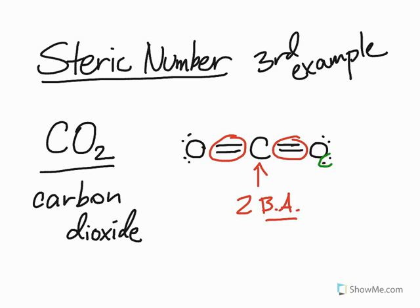Now you may say that these lone pairs around these oxygens, one, two, three, four, will contribute to the shape of the molecule, but that's incorrect. Those lone pairs are not part of the central atom. If we just take a look at the central atom, there are actually zero lone pairs around it.